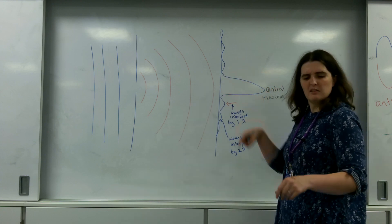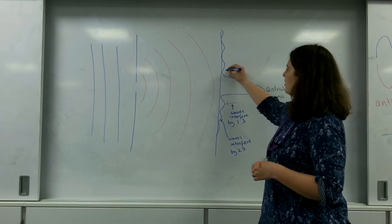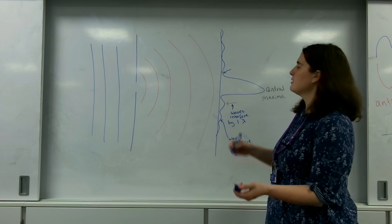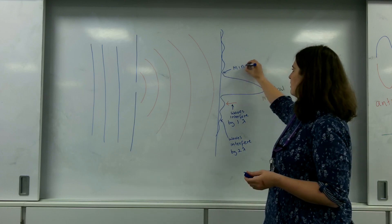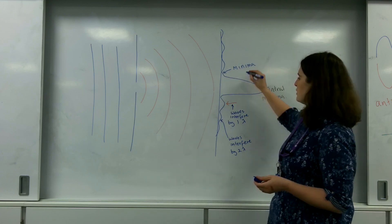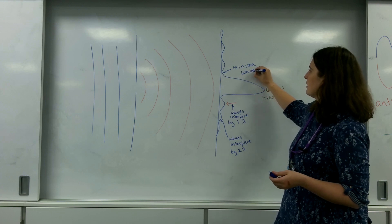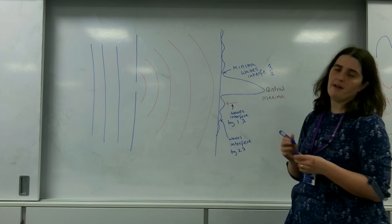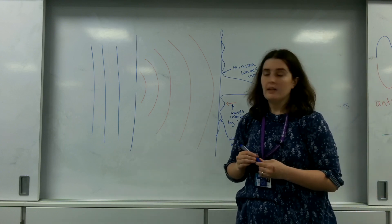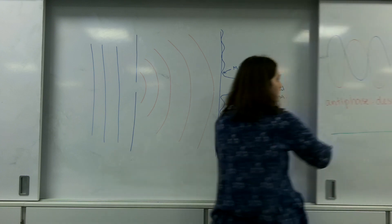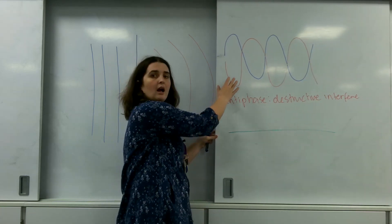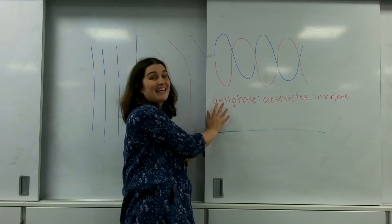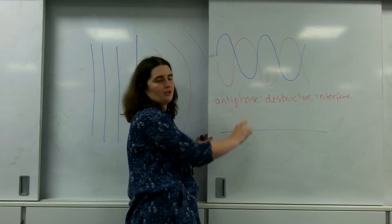These dark bits are minima. It's where the waves interfere half a wavelength out. And if I recap, being half a wavelength out is being in antiphase, destructive interference.